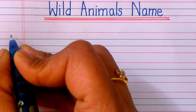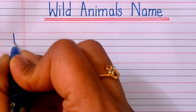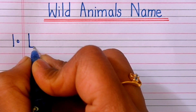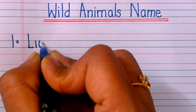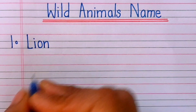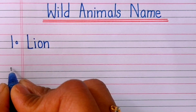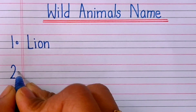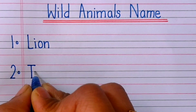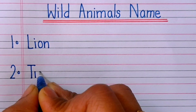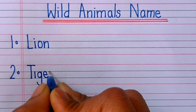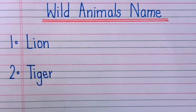Hello friends, let's write the names of 10 wild animals. The first one is L-I-O-N, lion. Second one, T-I-G-E-R, tiger.